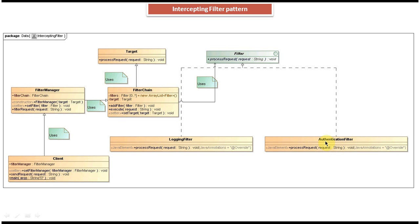The authentication filter is responsible for authenticating the user. The user will provide a username and password, and the process request method will verify whether the username and password are correct. That is the work of the authentication filter. The logging filter will track the request — it will just log the request. Basically, these filters are used for pre-processing or post-processing the request.